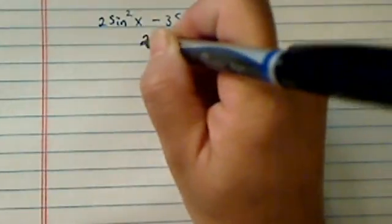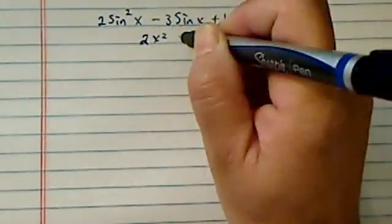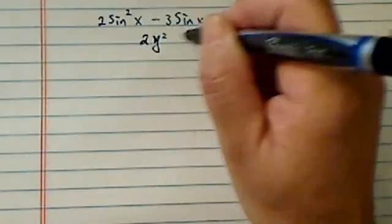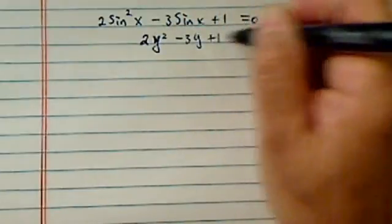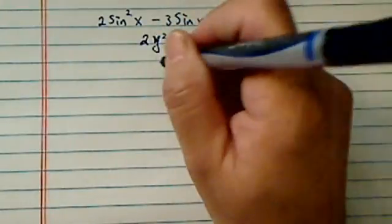First thing we're going to do is we're going to factor this one. Let's treat it as 2x squared. It's a better variable. 2y squared minus 3y plus 1. So let's factor this one.